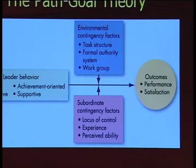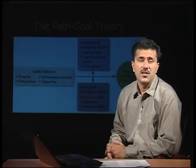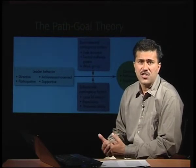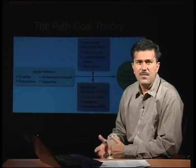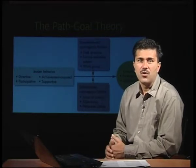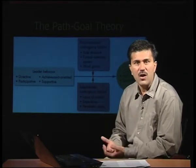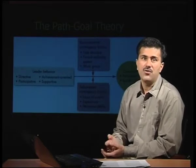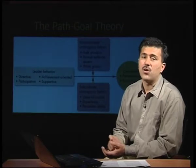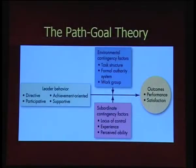The second subordinate factor is experience — how experienced you are to complete a certain assignment. The third is perceived ability, which differs from ability: ability means having certain features to complete an assignment, but perceived ability is what you perceive about yourself. For example, you know how to drive a car but internally question whether you will be able to do so. Therefore, leader behavior, subordinate contingency factors, and environmental contingency factors together create an impact on outcomes of satisfaction and performance.